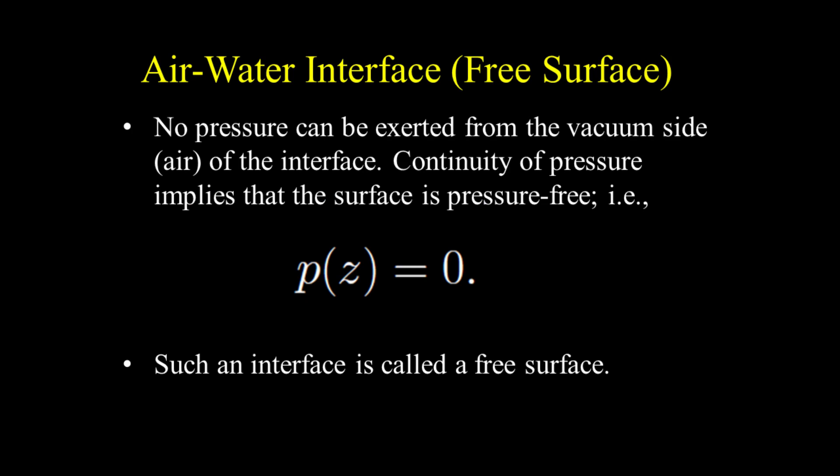No pressure can be exerted from the vacuum side, or air, of the interface. Continuity of pressure implies that the surface is pressure-free — that is, P(z) equals zero. Such an interface is called a free surface.